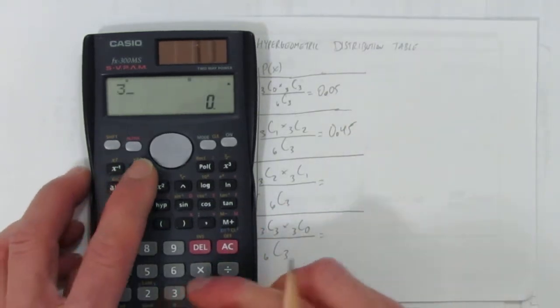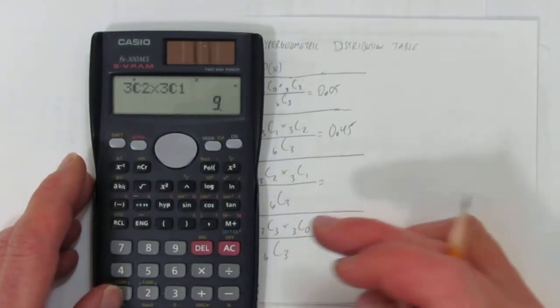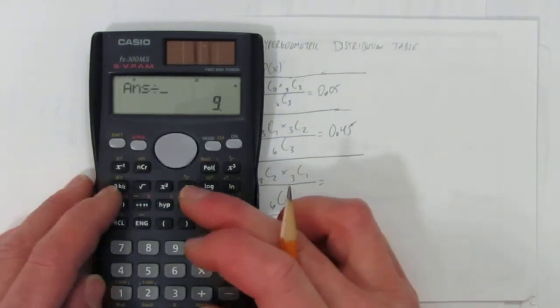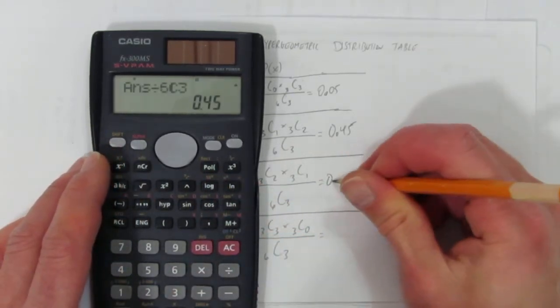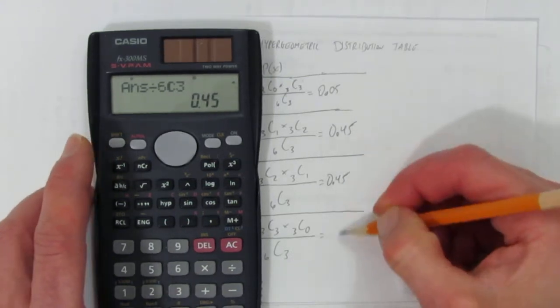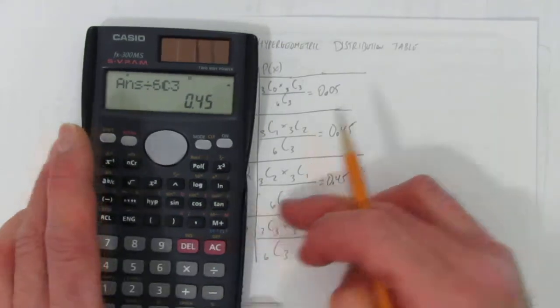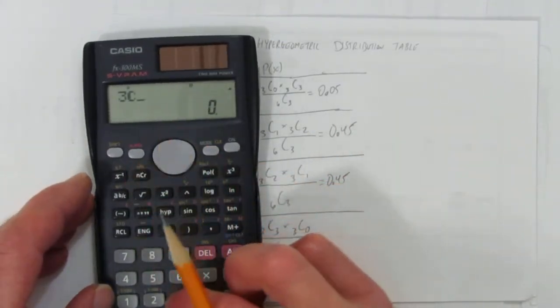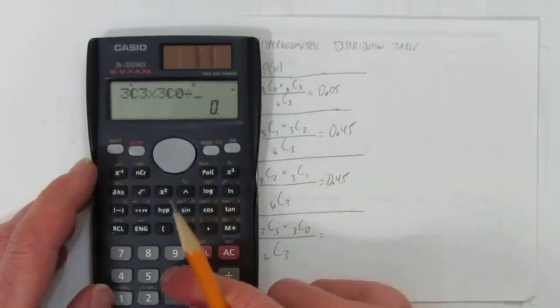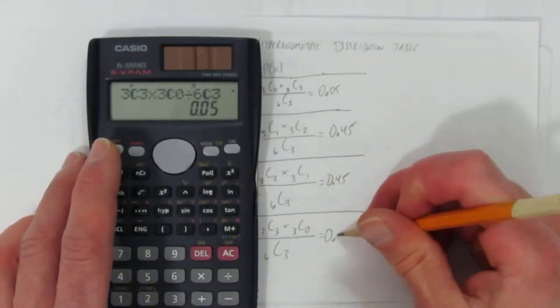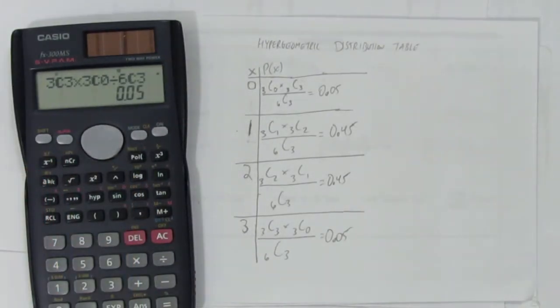What's 3 choose 2 times 3 choose 1, or 3, equals 9 divided by 6 choose 3, and we'll do it all at once and we get 0.45 again. It should add up to 100%, so I'm expecting that's 50, so I'm at 95. What's 3 choose 3 times 3 choose 0 divided by 6 choose 3? You get 0.05, and so that's how to make a hypergeometric distribution table.